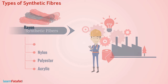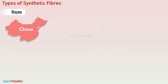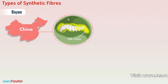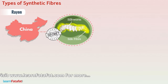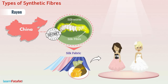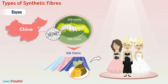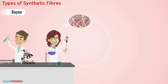Speaking about rayon, it has an interesting history. China discovered that silk fibers are obtained from silkworms. However, this discovery was kept as a secret for many years. The fabric made from silk fibers is costly but had great demand due to its beautiful appearance. Scientists tried to manufacture silk artificially, and towards the end of the 19th century, they were able to manufacture a fiber by chemical treatment of wood pulp.